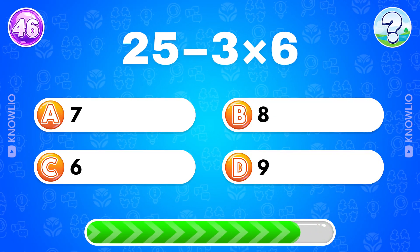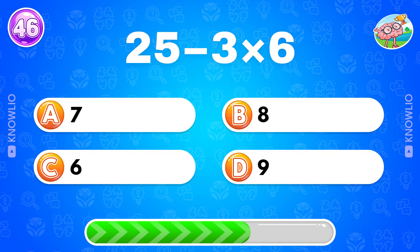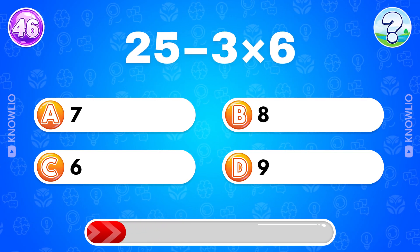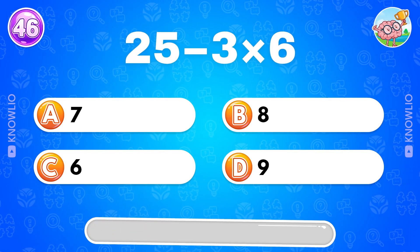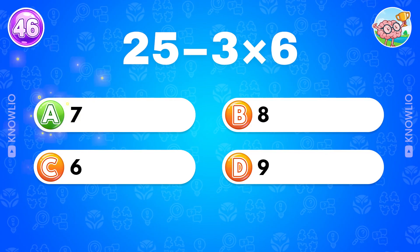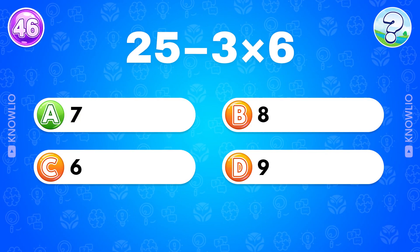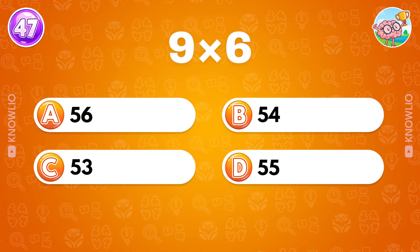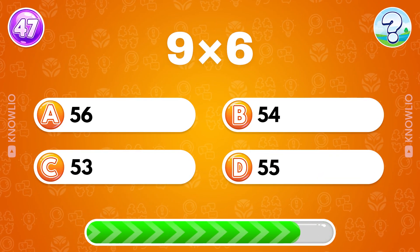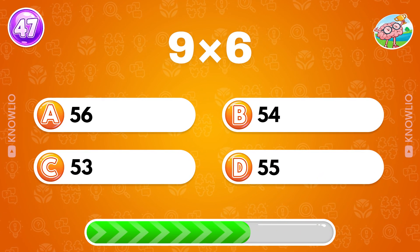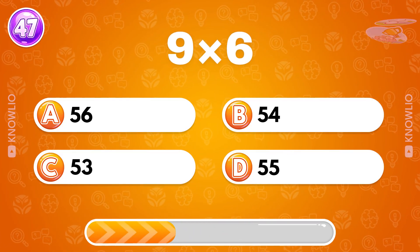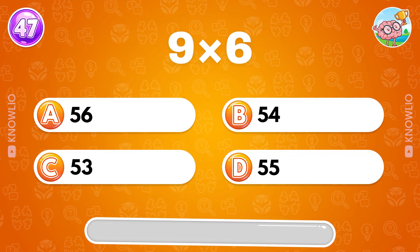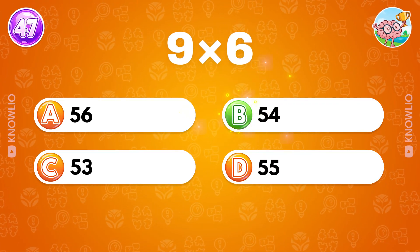Trick question: 25 minus 3 multiplied by 6? Answer A, 7. What's 9 multiplied by 6? Answer B, 54.